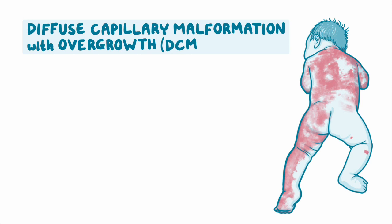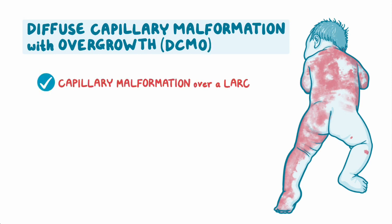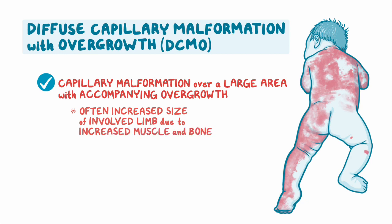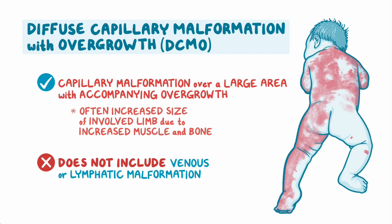Diffuse capillary malformation with overgrowth, or DCMO, involves capillary malformation over a large area of the body with accompanying overgrowth. Often increased size of an involved limb due to increased muscle and bone, but does not include venous or lymphatic malformation.